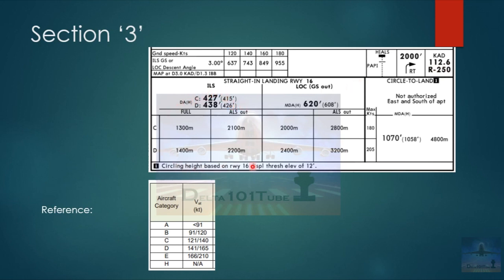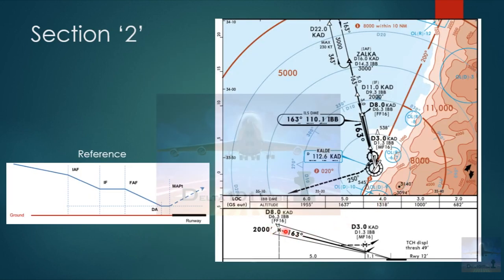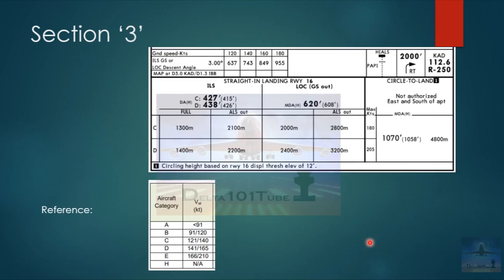Now comes the details about the decision height or decision altitude. What is this decision altitude or decision height? It is actually a specified altitude or height in the precision approach or approach with vertical guidance at which a missed approach must be initiated if the required visual reference to continue the approach has not been established. Looking back at this diagram, if the aircraft is coming down here and reaches the decision height, and at that point he is unable to have a visual of the runway, then he's got to carry out a missed approach - that's what the definition says.